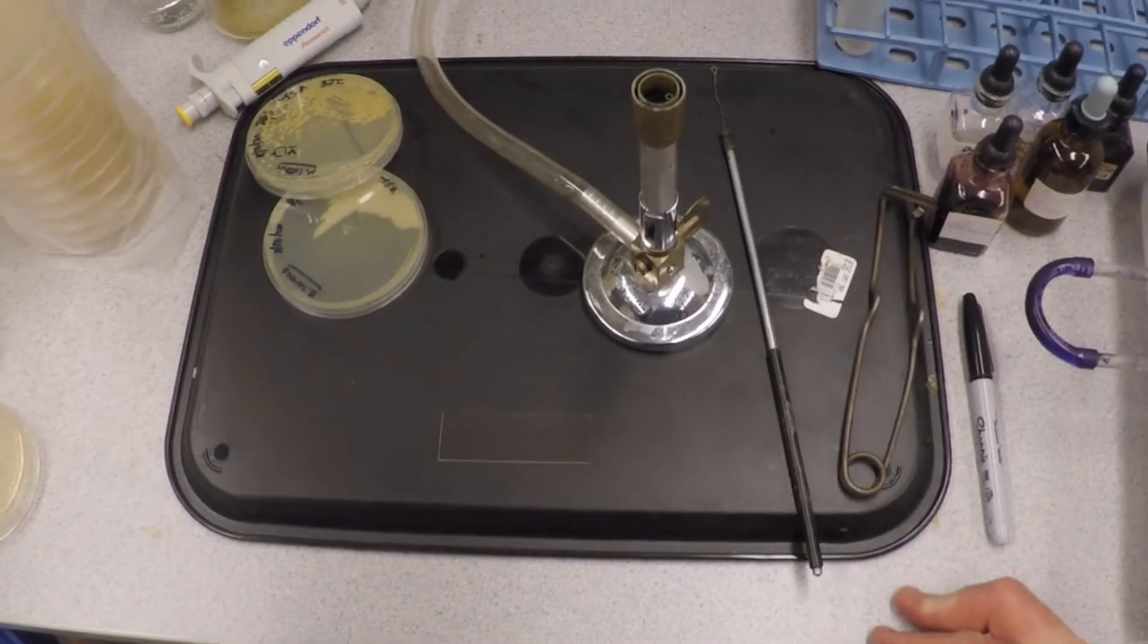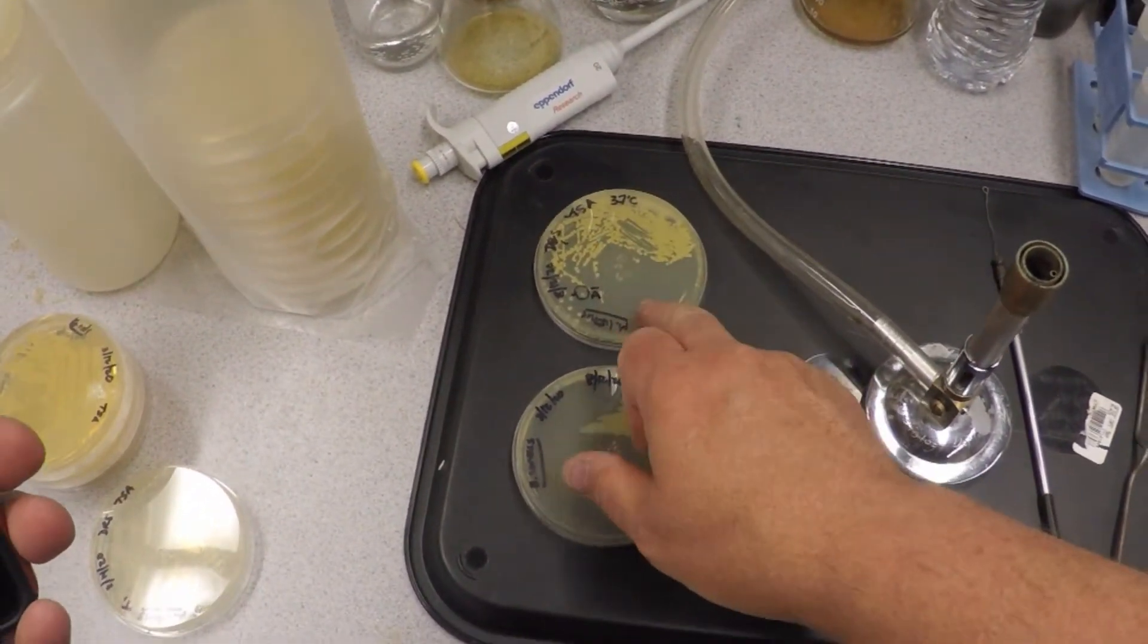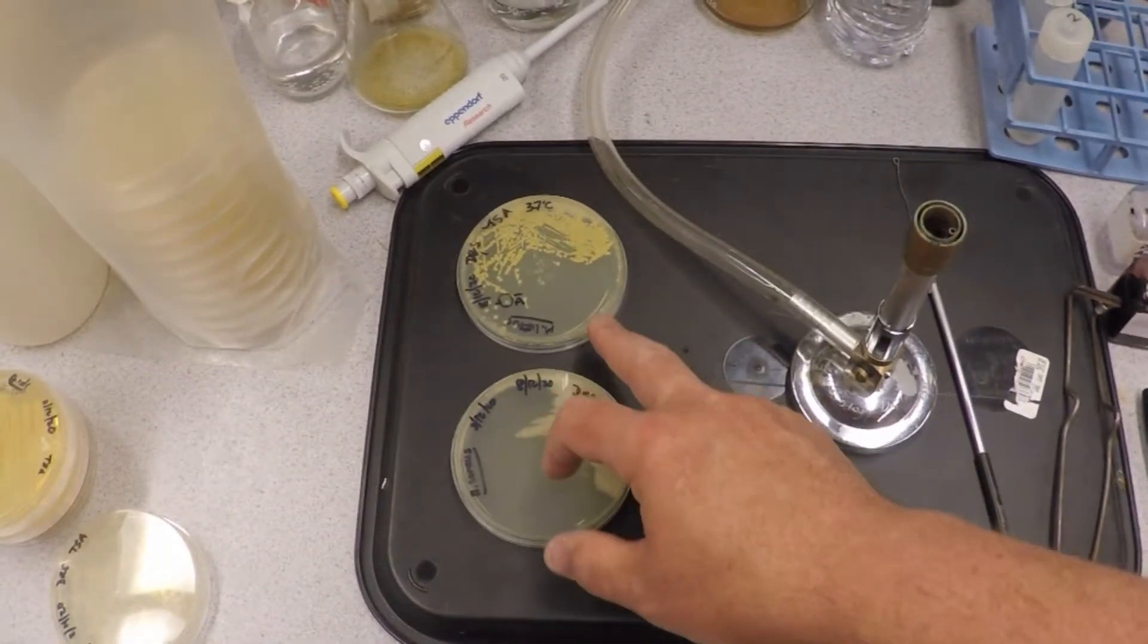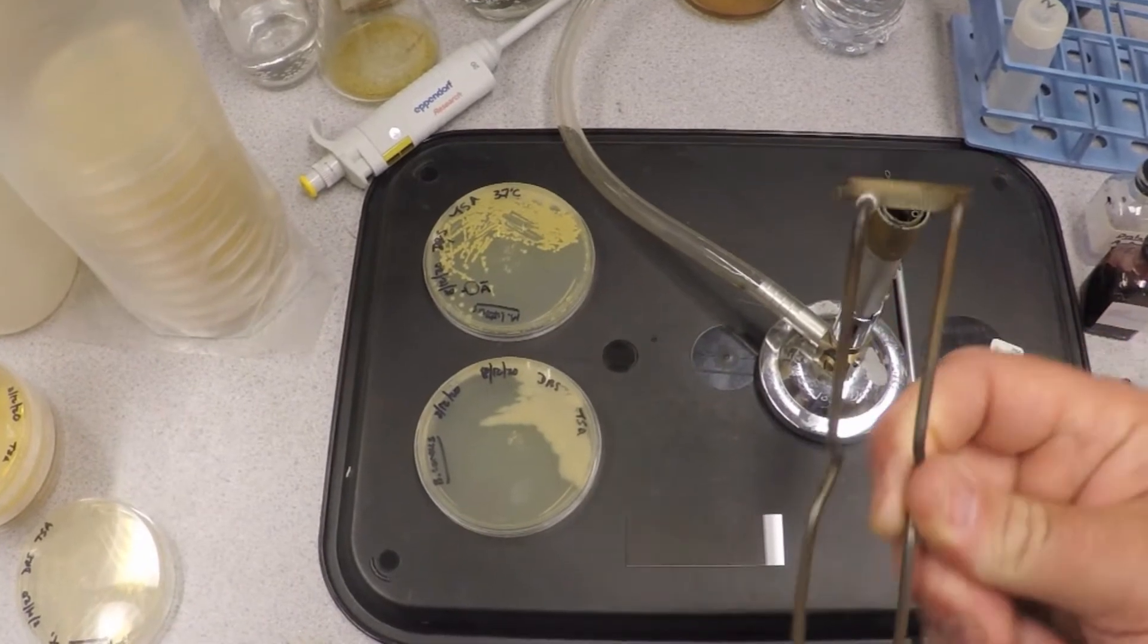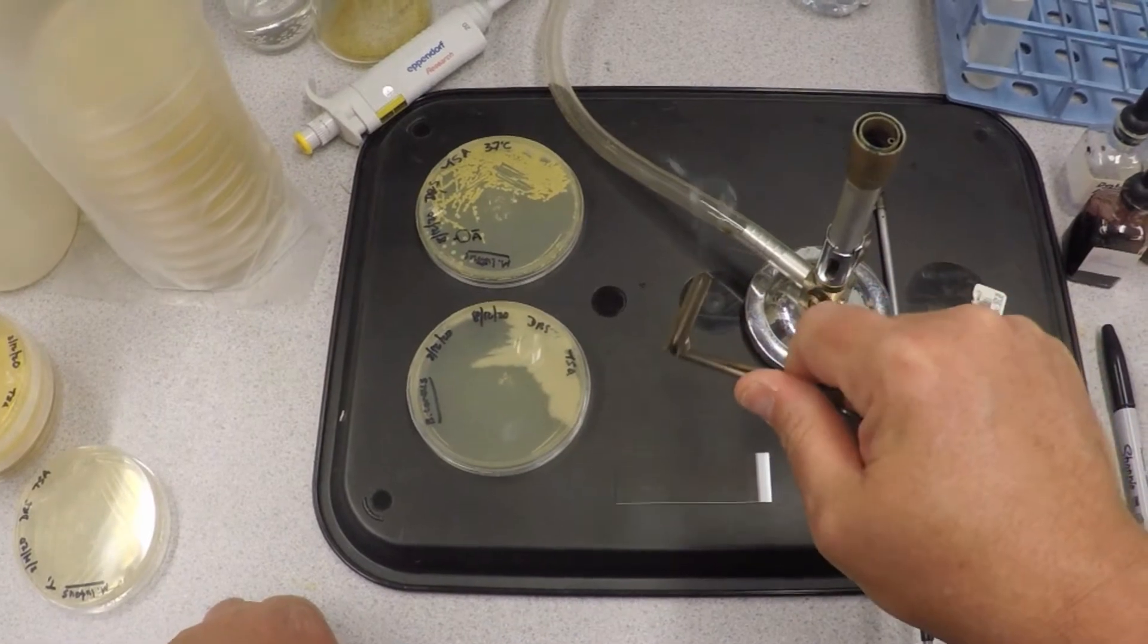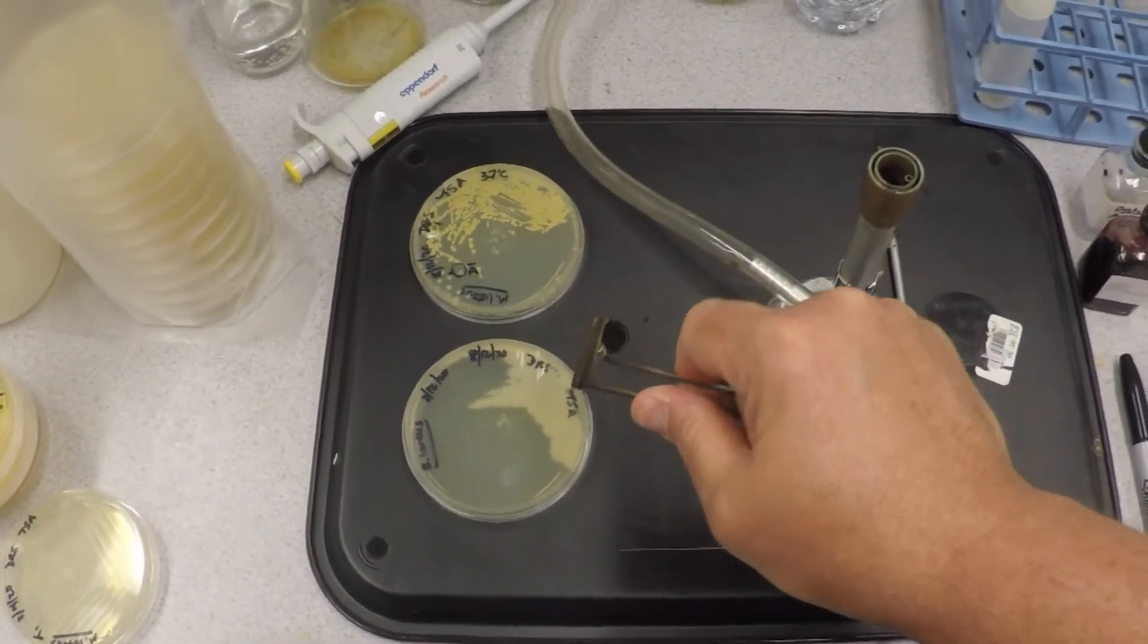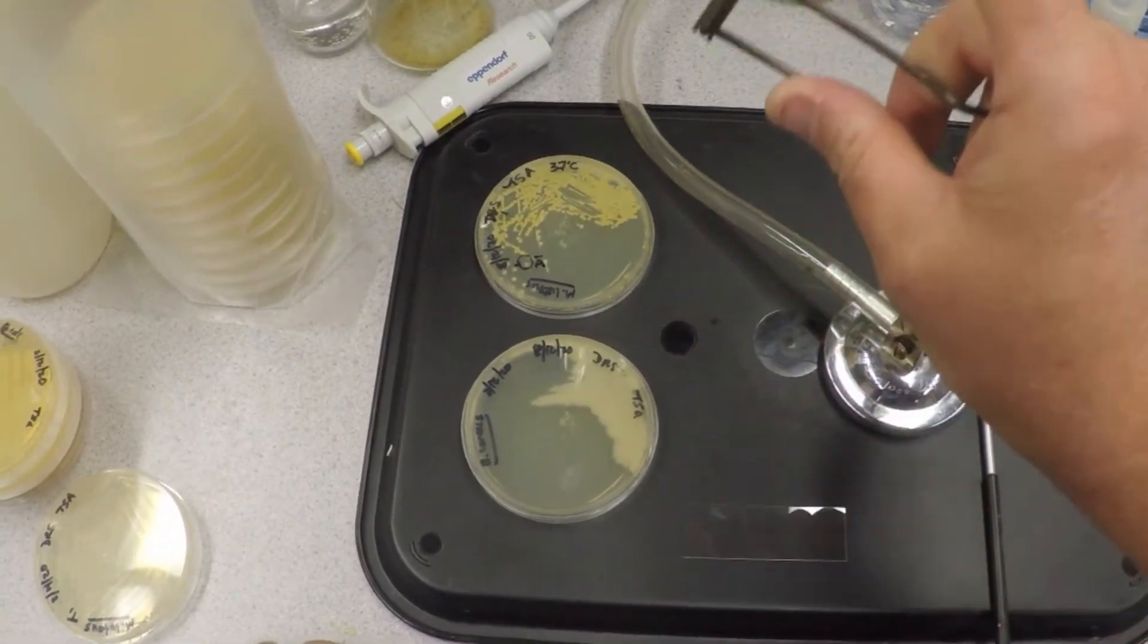Okay, so we're going to Gram stain some Bacillus and some Micrococcus luteus. What you're going to need is a flame, your organisms, a loop, and a striker. Remember the striker - if you do it just right you can get a smoke ring. Sometimes you can get them to go and put your finger through them.